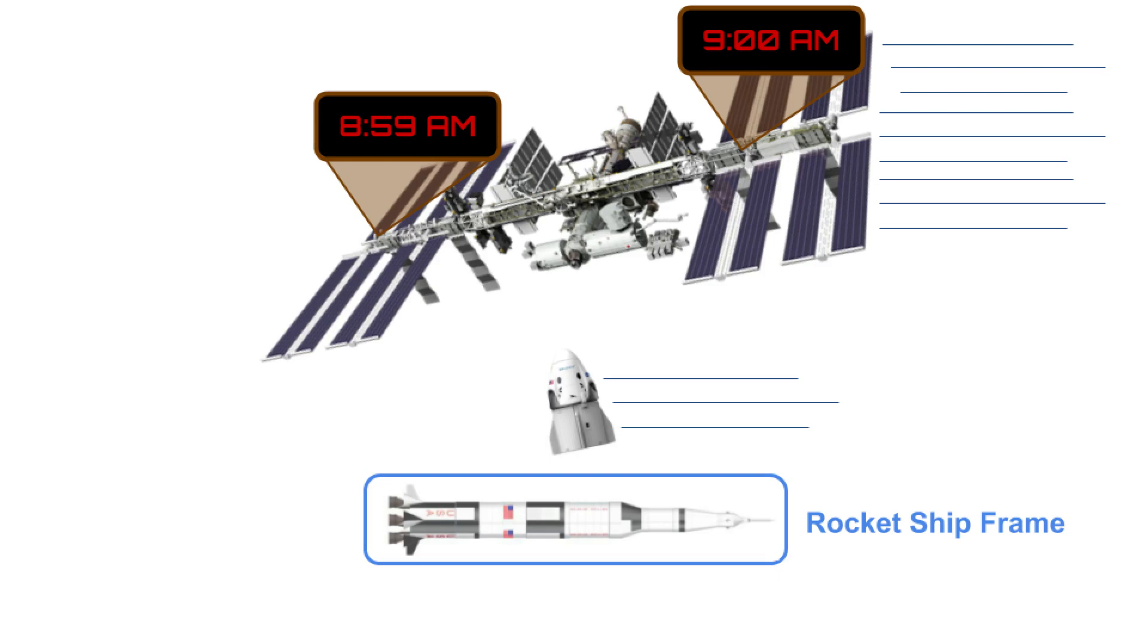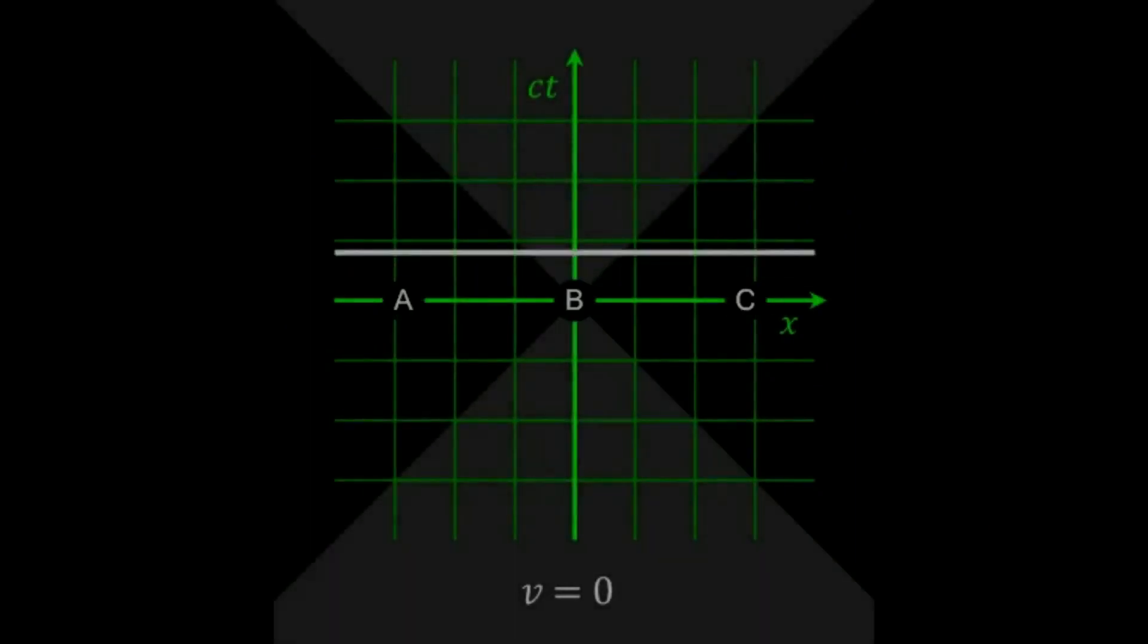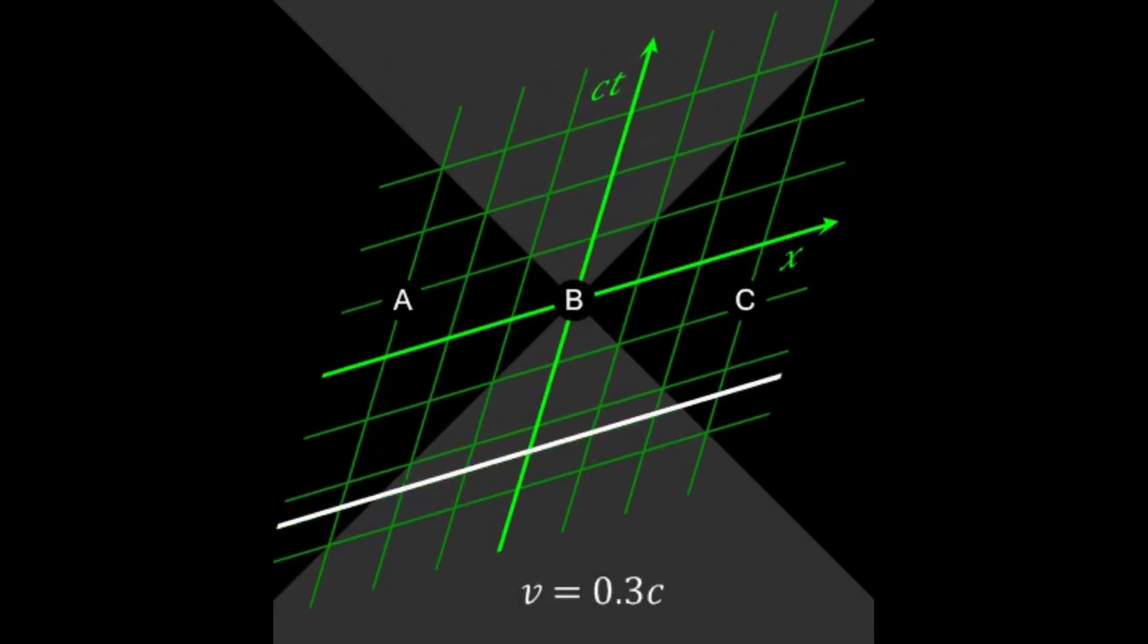If a rocket flies rightwards by a space station while two clocks on the station simultaneously strike 9am, those on the rocket will not consider the strikes to be simultaneous. They will consider the clock on the right to strike 9am before the clock on the left. Likewise for another rocket traveling in the opposite direction, it would see the clock on the left strike 9am before the clock on the right. Hence we get three different, but nonetheless equally valid, interpretations on the order of the events.